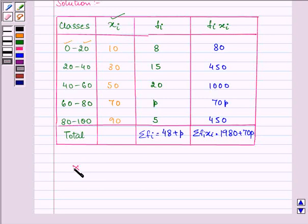We know that the formula for arithmetic mean is equal to summation Fi Xi divided by summation Fi.